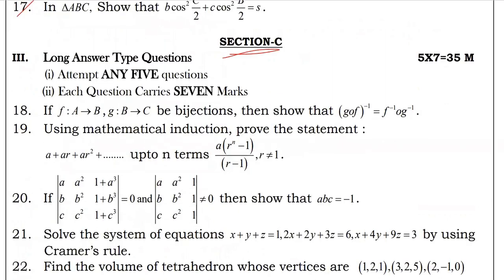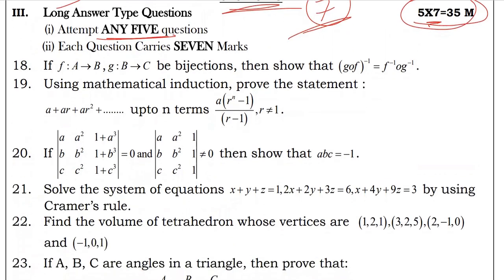Next Section C: long answers. Total 7 questions given, choose any 5. Each one carries 7 marks, 35 marks total for this section.